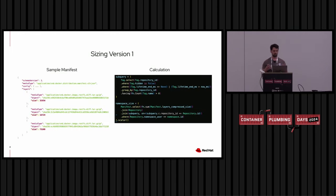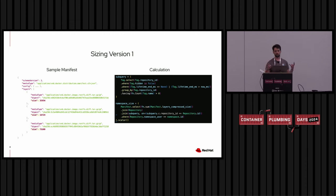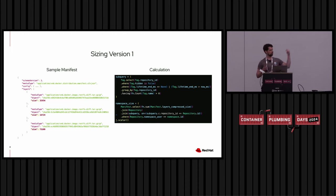The first version of sizing looked like this: when a manifest was pushed to the registry, we have size fields within each one of the layers. When a manifest was pushed, we would add all these layers together and store the result in the manifest table in a field called layers_compressed_size. Then, whenever an image was pushed or deleted, we'd take all the manifests pointed to behind a live tag, add them together, and store that in the respective namespace and repository size tables.